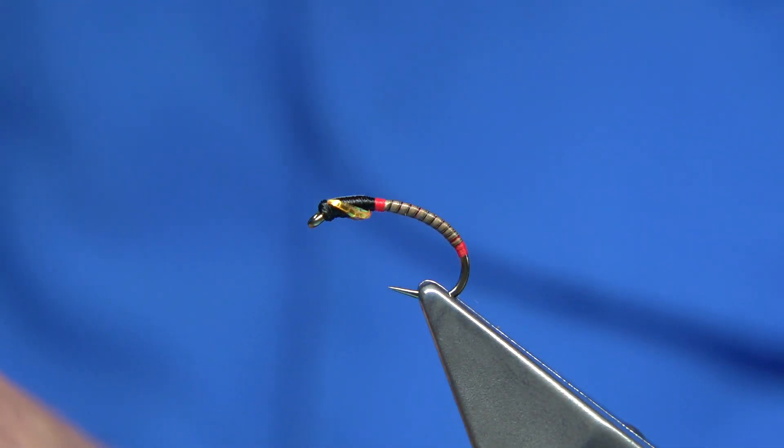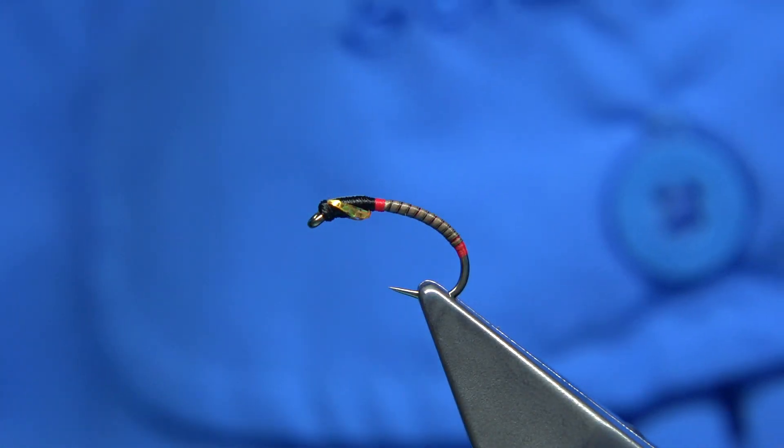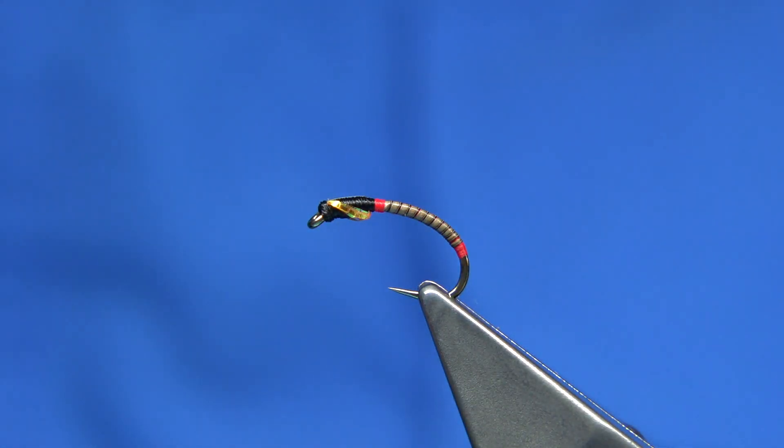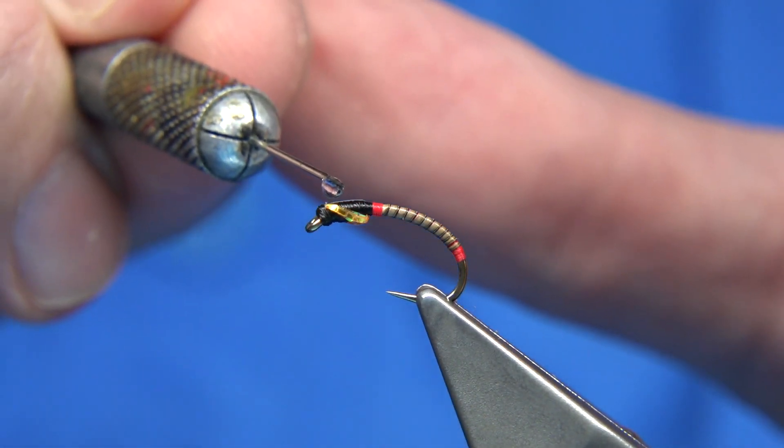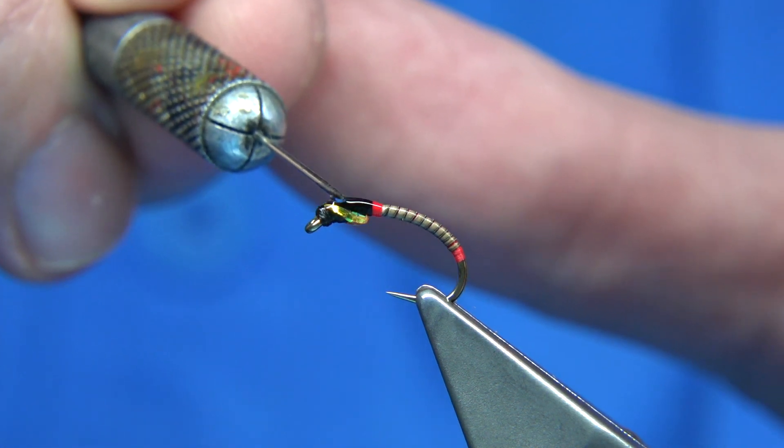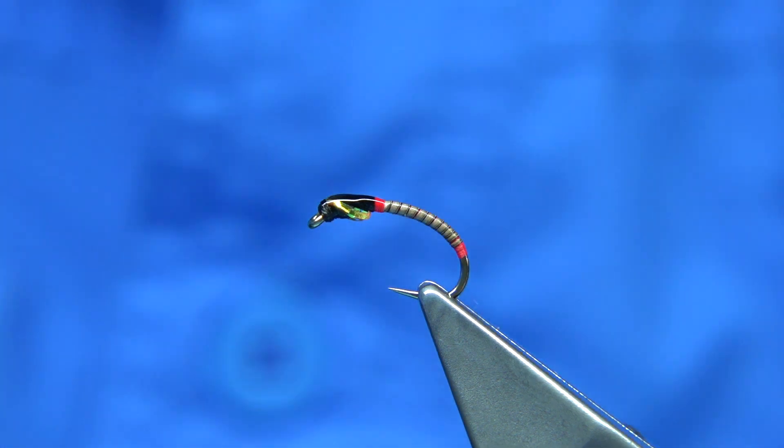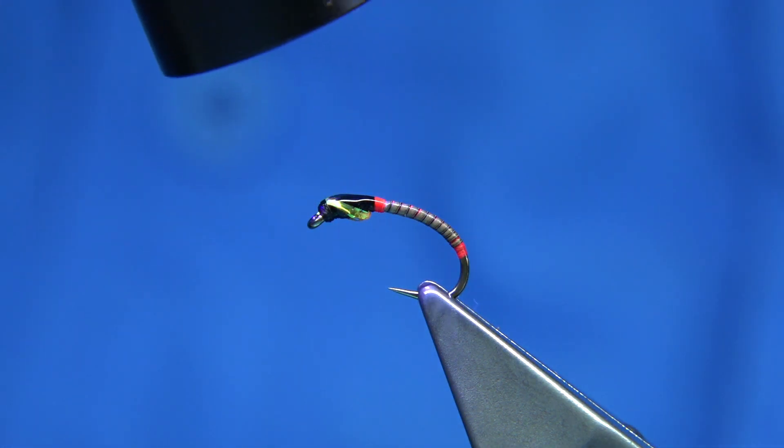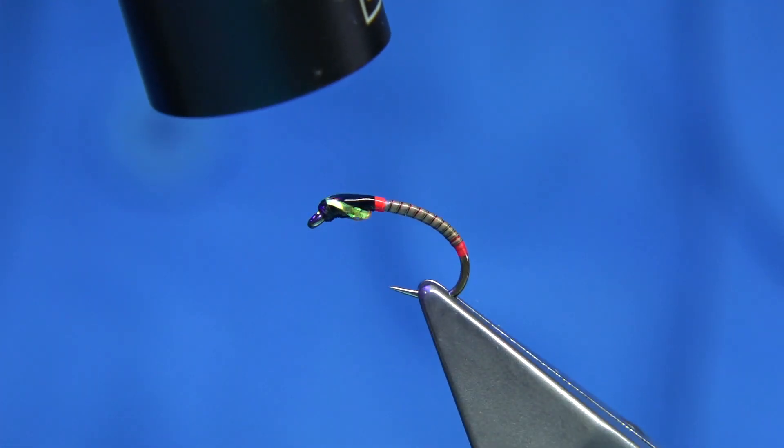Then we're obviously going to use the UV resin. Going to put it onto a wee tub here. I'm using just a light resin, just normal, well I'm using the bug bond version. I'm going to apply it with my needle. I want to do the thorax. I usually do that first. And then set the resin. And see how the red shows through.